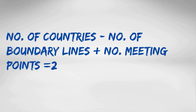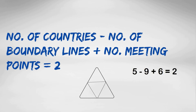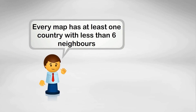Let's look at an example with this map. There are five countries — the four obvious ones plus the one on the outside — minus nine boundary lines, plus six meeting points, and sure enough it equals two. So let's use that equation to show that every map has at least one country with fewer than six neighbours, meaning it must be one of those four country types I showed.